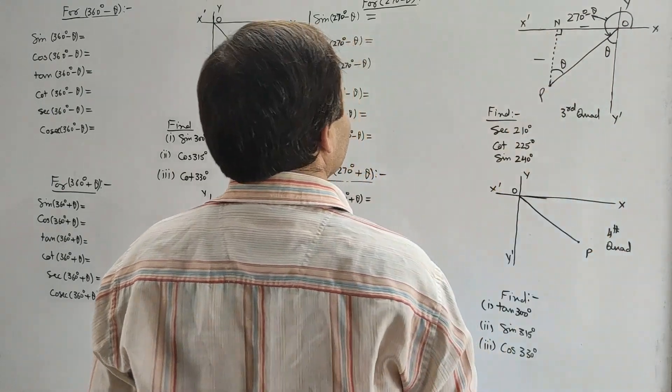Using T-ratios for 360° plus θ: sec 390° = sec(360° + 30°) = sec 30°; since cos 30° = root 3 by 2, sec 30° = 2 by root 3. Tan 405° = tan(360° + 45°) = tan 45° = 1. Cos 420° = cos(360° + 60°) = cos 60° = 1 by 2.